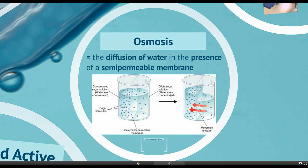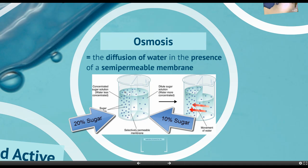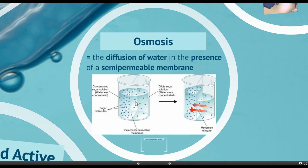Here's an example: we have a beaker with a semi-permeable membrane, similar to a cell membrane. On one side, we have a solution that's 10% sugar, and on the other side, 20% sugar. If you calculate the concentration of water on each side — if one side is 10% sugar, it must be 90% water.